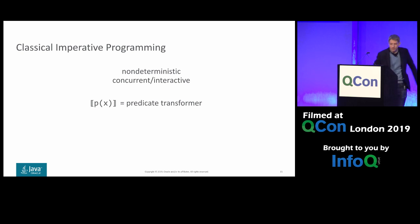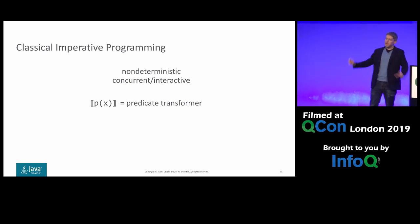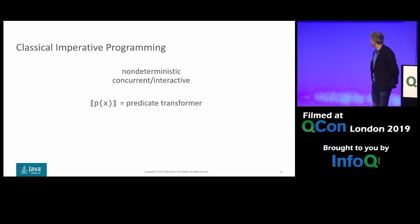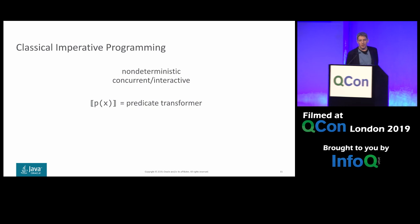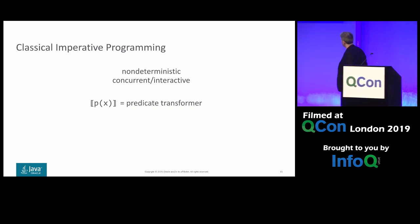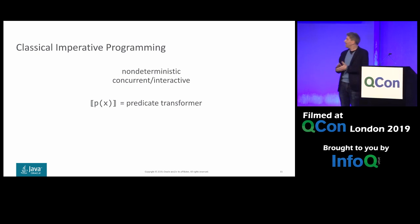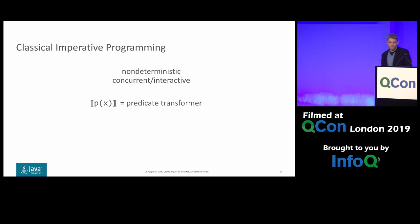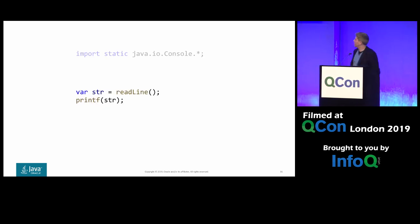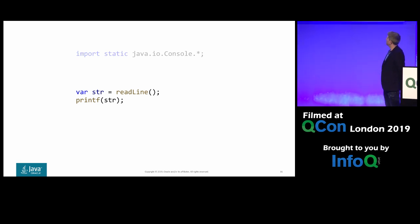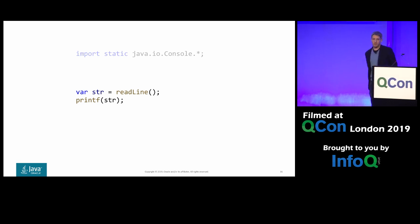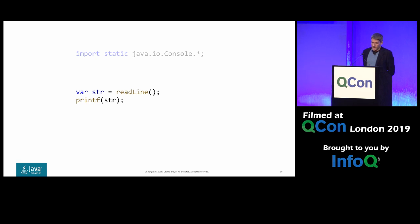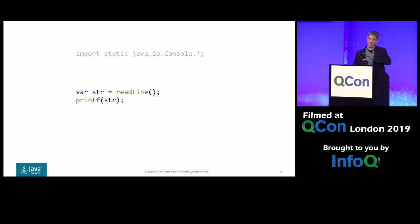If you're using classical imperative programming like Java, C, or Python, the meaning of a subroutine application is not the same as a mathematical function — it's something called a predicate transformer. What matters here is that the outcome does not need to be deterministic, unlike functions. This is why in Java we can simply call readLine — we don't know what the result string is going to be — and then print it right back to the console.